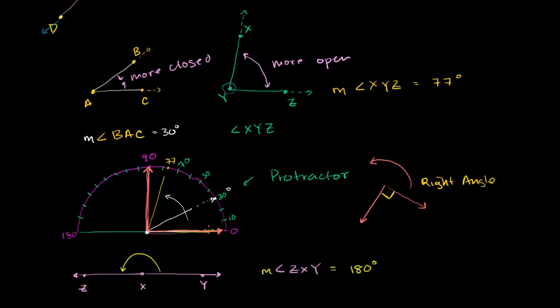There are one or two last things I want to introduce in this video — special words for types of angles. If an angle is less than 90 degrees — for example, both of the angles we started our discussion with are less than 90 degrees — we call them acute angles. So those are acute angles, and they are less than 90 degrees.